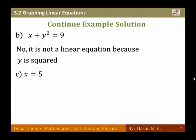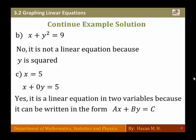For part (c), x equals 5 can be written as x plus 0y equals 5, which fits the form ax plus by equal to c. Therefore, it is a linear equation in two variables.